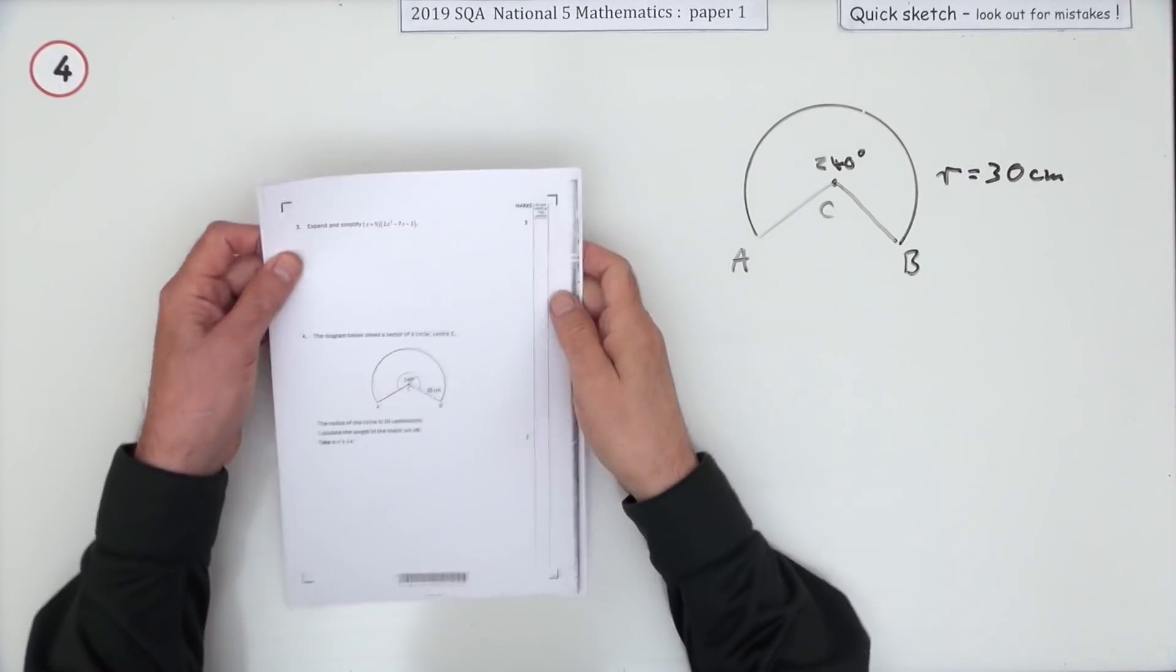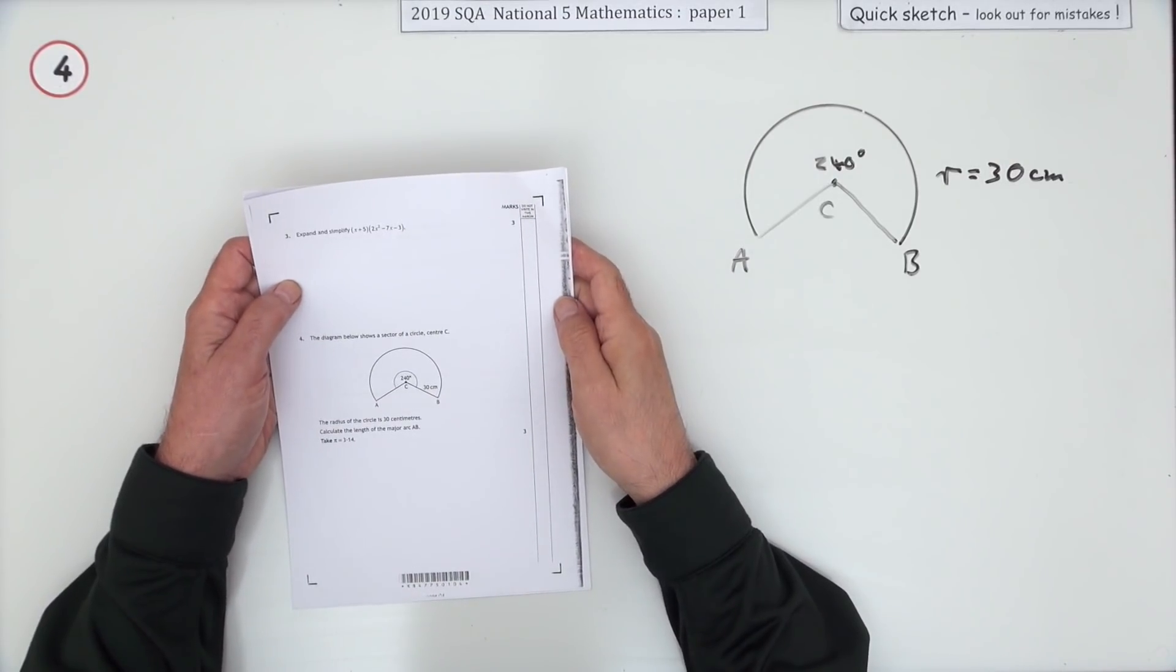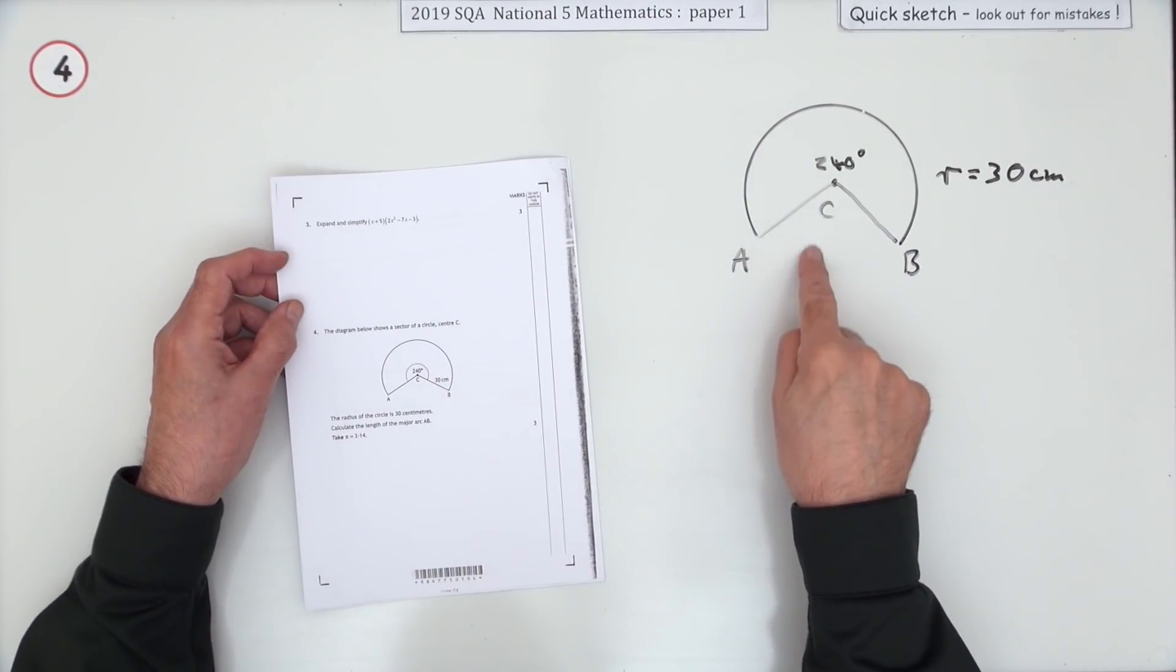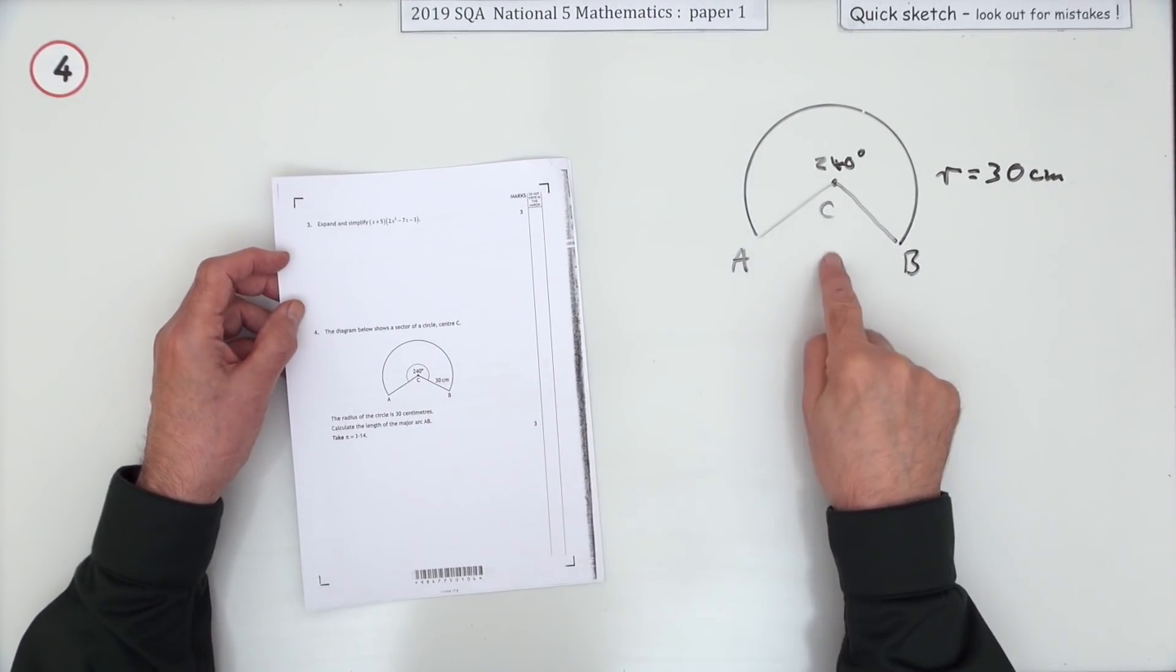Question 4 then from the 2019 National 5 Exam Paper 1. Three marks here for it. There you go. Slice of a circle. Slices of circles. Fractions of circles.